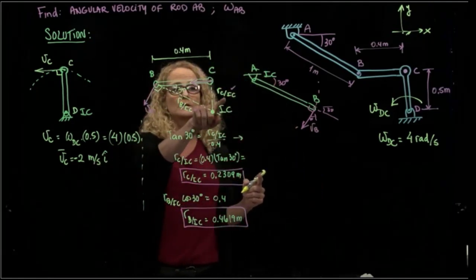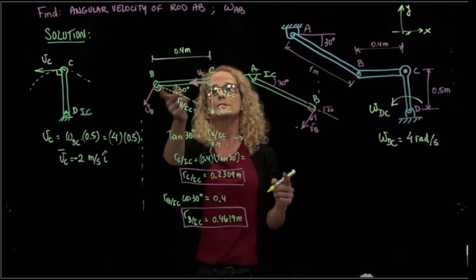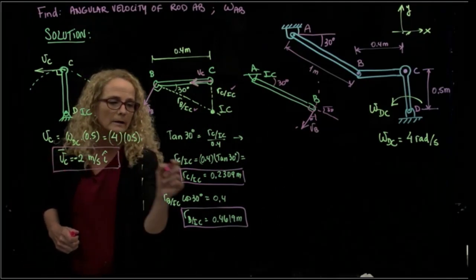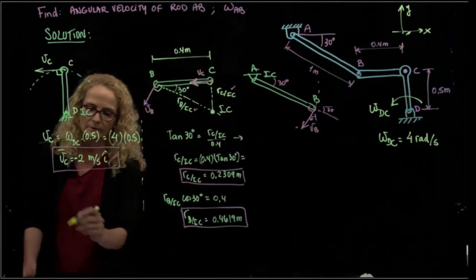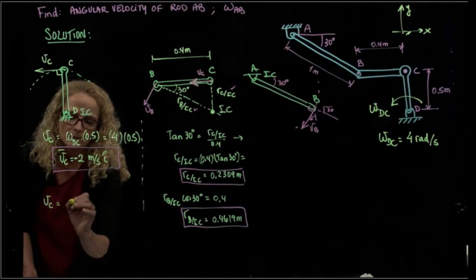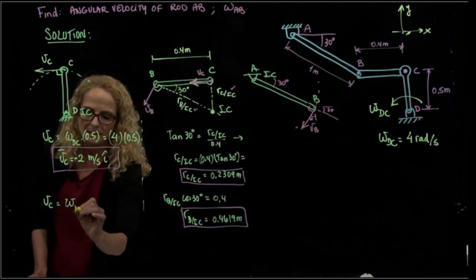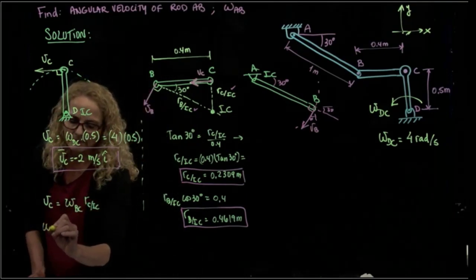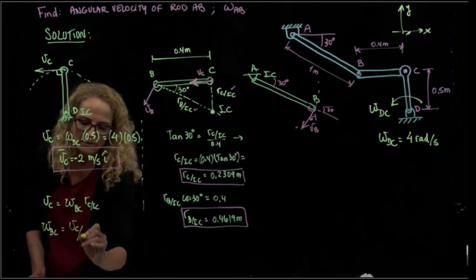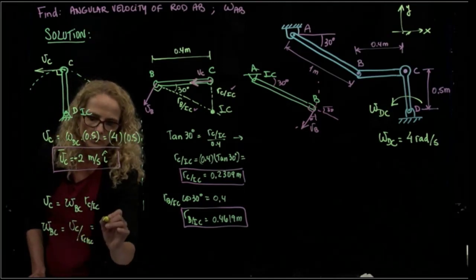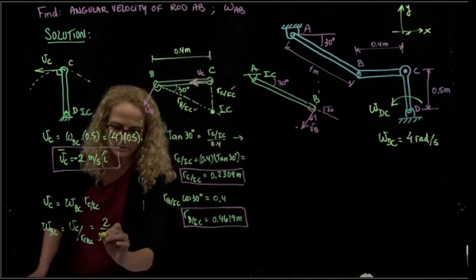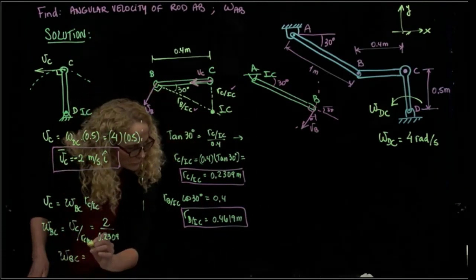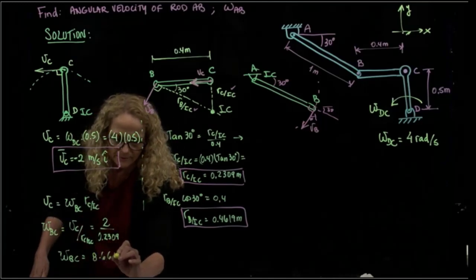Since I know the velocity of C and the distance RC_IC, I can find the angular velocity of bar BC. The velocity of C equals omega BC times RC_IC, so omega BC equals 2 divided by 0.2309. Therefore, the angular velocity of bar BC equals 8.66 radians per second.